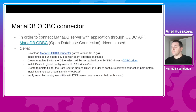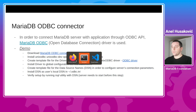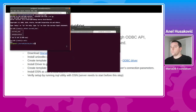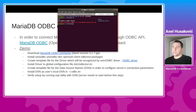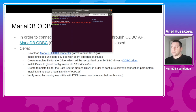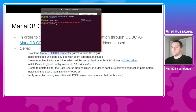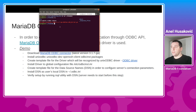The next step is to see how to connect to the MariaDB ODBC connector. I have already prepared some files. The first step is to download the MariaDB ODBC connector. ODBC stands for Open Database Connectivity — it is a standardized API, and MariaDB has its own connector implemented as a shared library. The latest version of the MariaDB ODBC connector is 3.1.7.